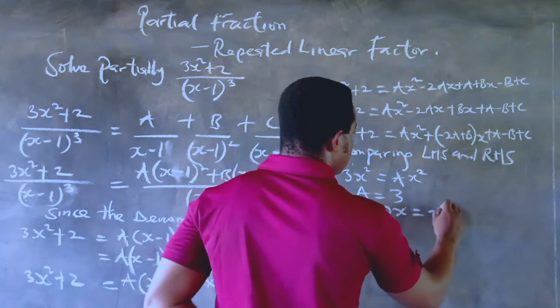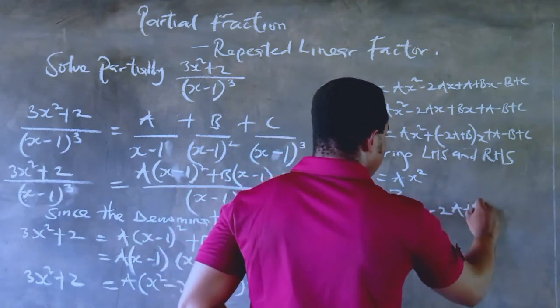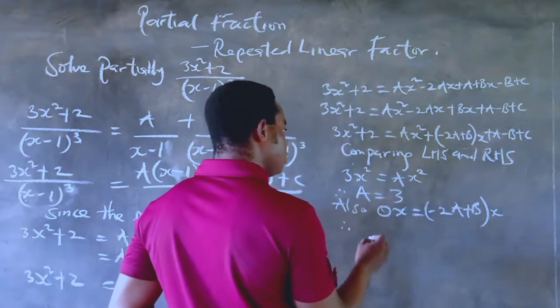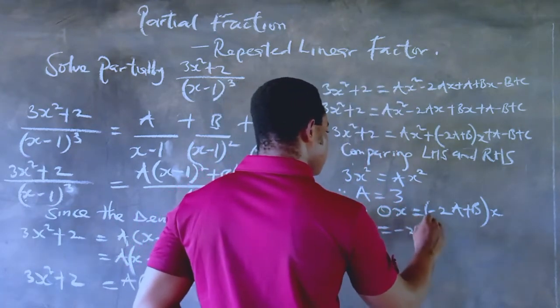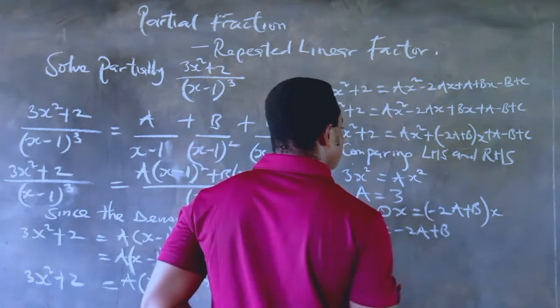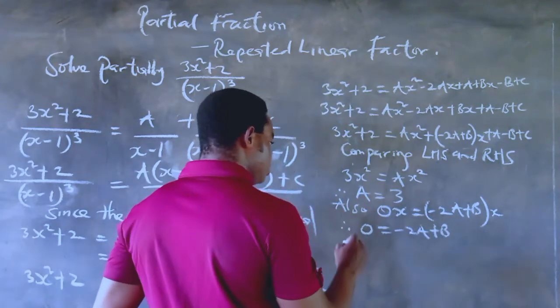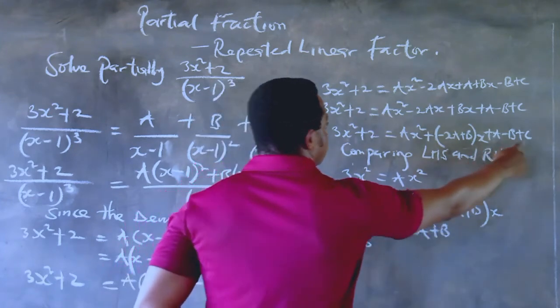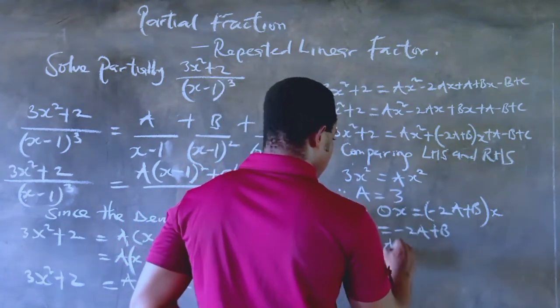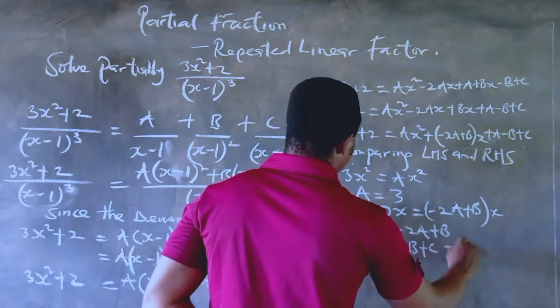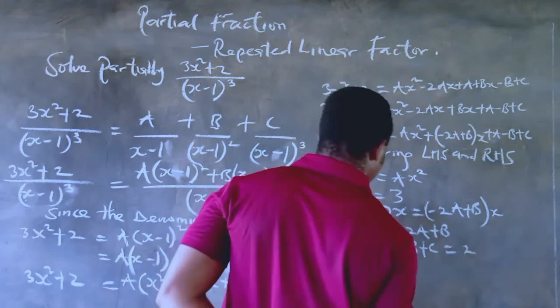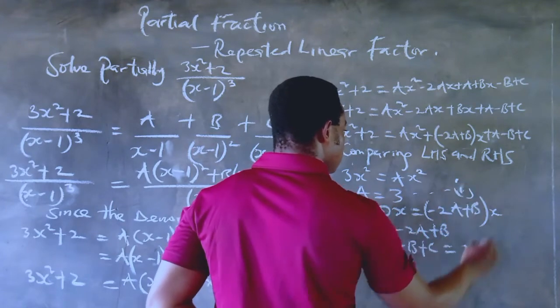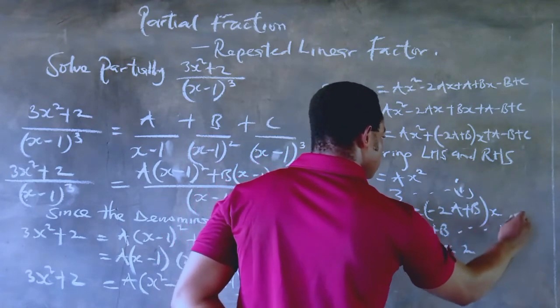So the 0x is equal to the (-2A plus B)x. That's the x raised to power one component on both sides, so we can conclude that -2A plus B is equal to zero. So if a component of the equation is not written, then that means the coefficient is zero, so don't forget that should in case you encounter such.